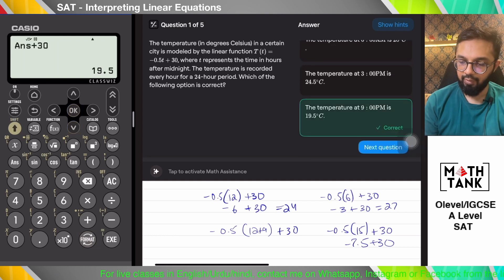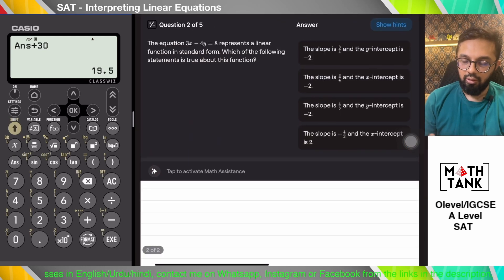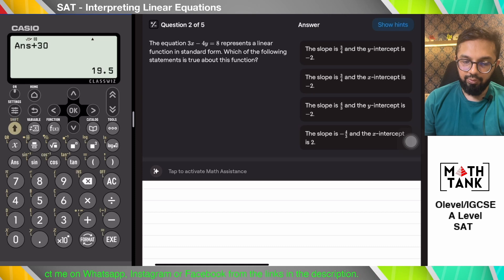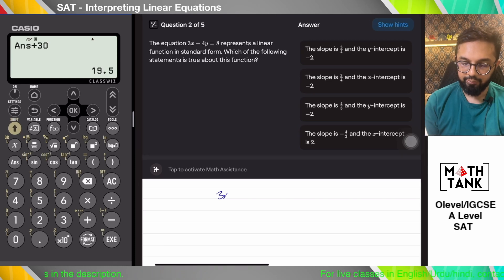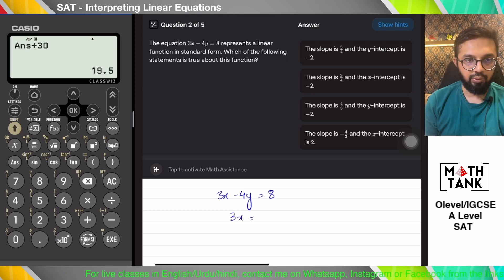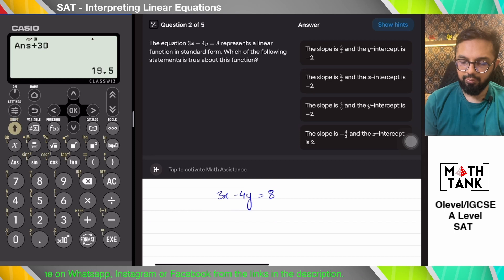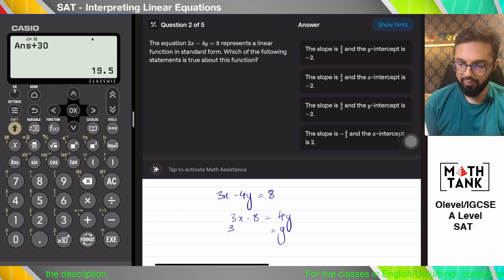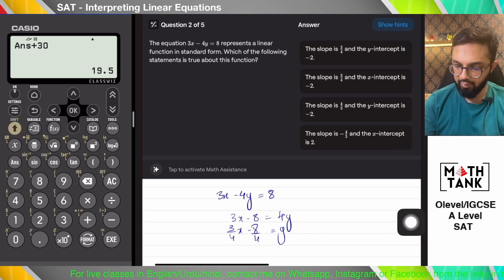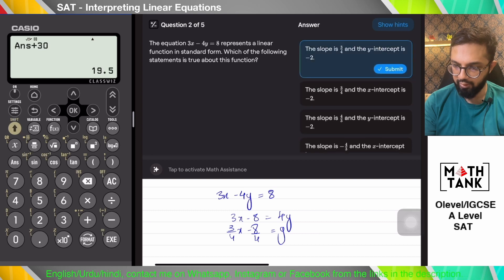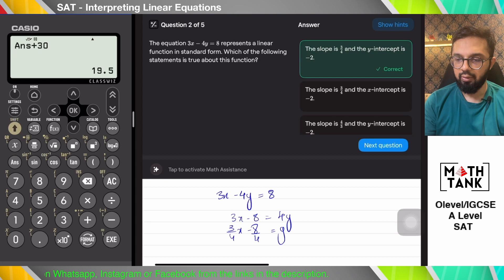The next one says the equation 3x minus 4y equals 8 represents the linear function in standard form. Which of the following statements is true about this function? Let's try to make y the subject, because I'm asking questions about the slope and the y-intercept or the x-intercept. The slope has to be 3 over 4 and the y-intercept is minus 2. Yes, that fits. That should be the right answer.